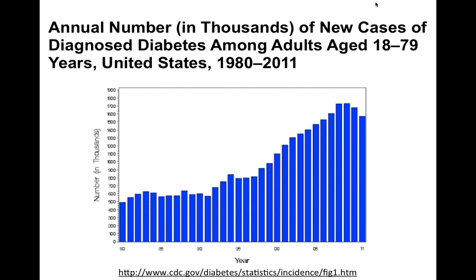Diabetes alone is now a condition that includes over 33 million Americans. If you look over the last 23 years, you'll see an increase in the annual rate of newly diagnosed diabetics that almost tripled during this time. So just out of curiosity, just so that you don't have to listen to me talk for the next 38 minutes — any ideas as to why the incidence of diabetes has skyrocketed according to this graph? Go ahead and type in your suggestions into the question box.